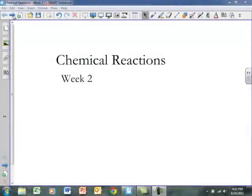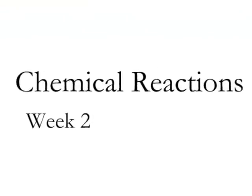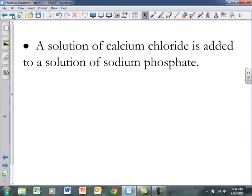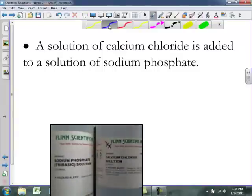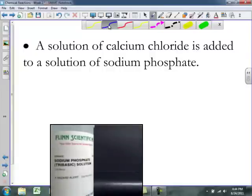Hey, Denelton High School. This is Mr. Aiden and this is Chemical Reactions for Week 2. This week we're going to be taking a look at two chemical reactions, one of them being a solution of calcium chloride is added to a solution of sodium phosphate. So since we have two solutions, we know we have a precipitation reaction.